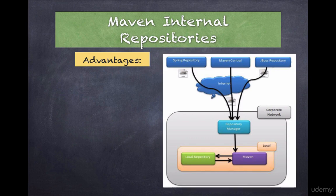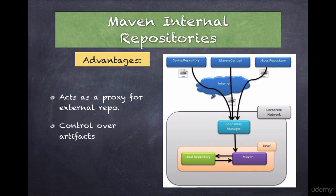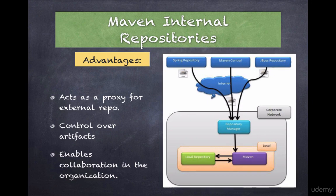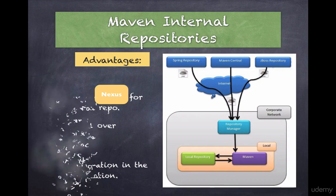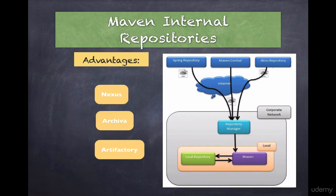The internal repository manager acts as a proxy to remote repositories. Because you have full control over your internal repository, you can regulate the type of artifacts allowed in your company. Additionally, you can push your organization's artifacts onto the server, enabling better collaboration between teams. There are several open source repository managers, such as Sonatype Nexus, Apache Archiva, and Artifactory.